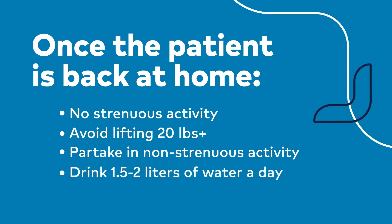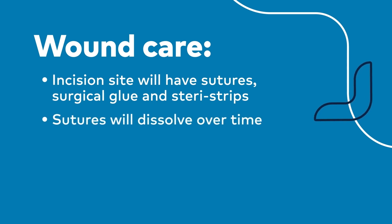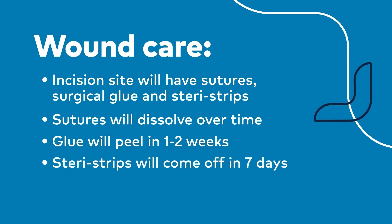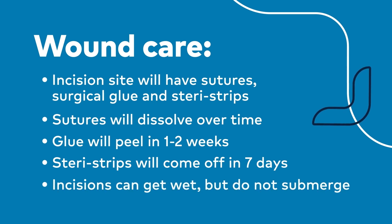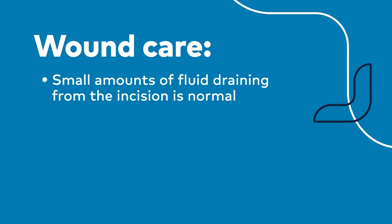Staying hydrated is also key. Drinking one and a half to two liters of water a day by small frequent sips is recommended. Wound care is very important once the patient is home. The surgical site will have incision sutures or stitches deep in the skin and surgical glue or Steri-Strips on top. The sutures dissolve over time, and the glue begins to peel one to two weeks after surgery. Steri-Strips will come off on their own in about seven days. It's safe to let the incisions get wet during a shower, but don't submerge them in water until they're completely healed. A small amount of yellow, pink, or clear fluid draining from the incision is normal.